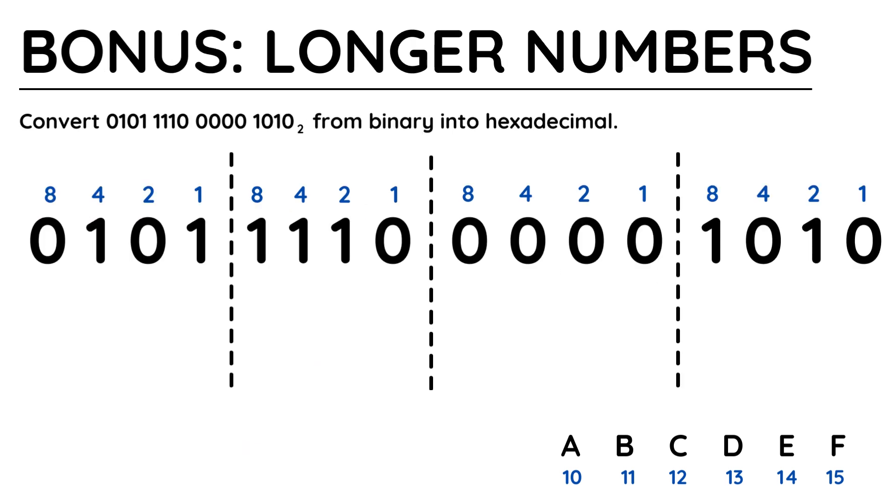For GCSE and A-level computer science courses in the UK, you usually work with just 8 bits to give 2 hexadecimal values. As a bonus, I just want to show that working with more bits isn't too scary, as you break a binary number into nibbles, remember that's groups of 4, and convert each at a time.